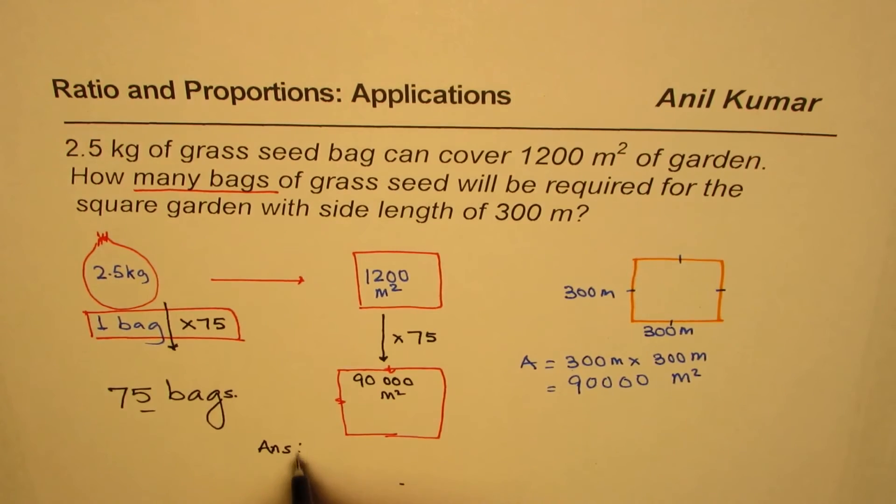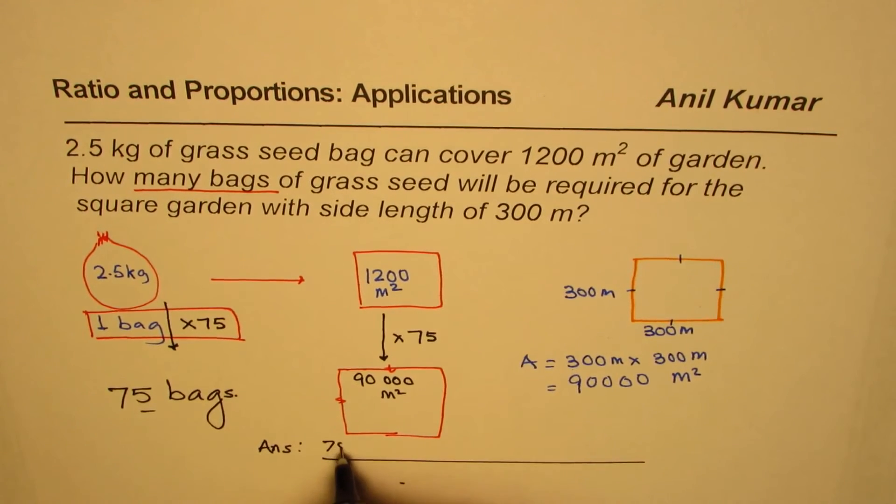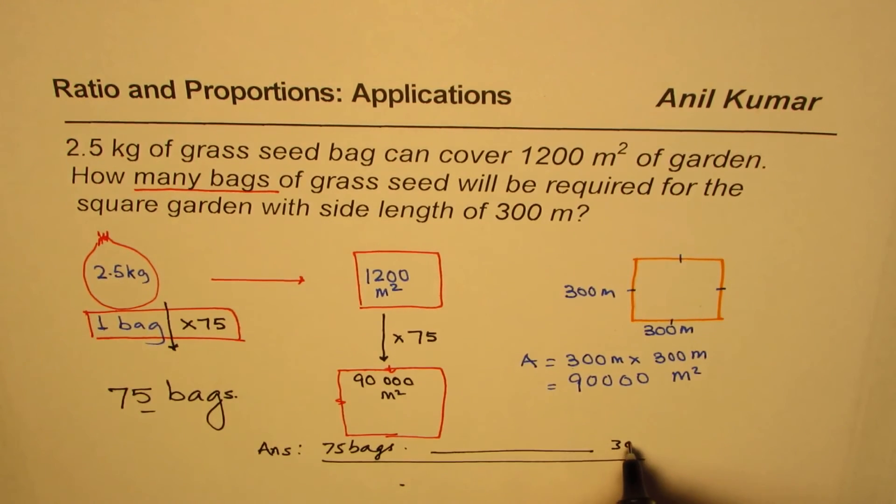So write down all this—75 bags for a square garden with 300 meter side. That is how you should be doing the question. I hope that helps, thank you, and all the best.